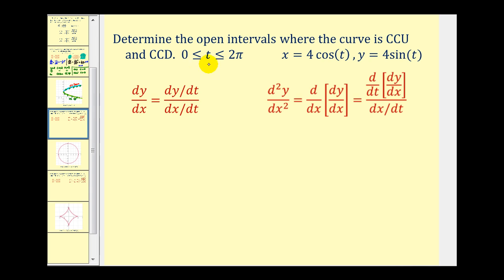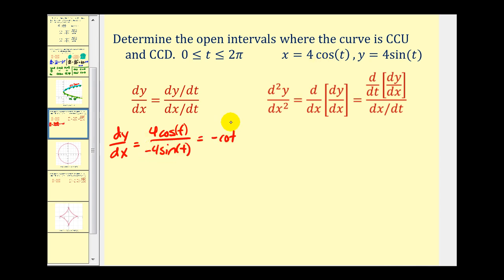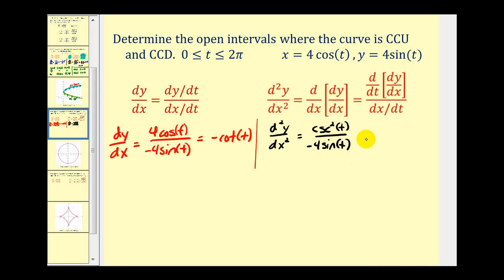For the second example, t is on the closed interval from zero to two pi. Starting with the first derivative: dy/dt is four cosine t, and dx/dt is negative four sine t, so the first derivative dy/dx equals negative cotangent t. For the second derivative, we take the derivative of negative cotangent t with respect to t, which gives positive cosecant squared t, and divide by dx/dt which is negative four sine t. Since cosecant t equals one over sine t, this simplifies to negative one over four sine cubed t.